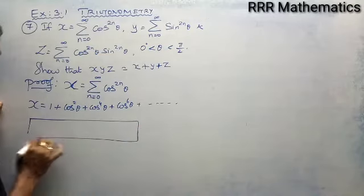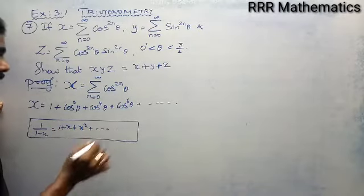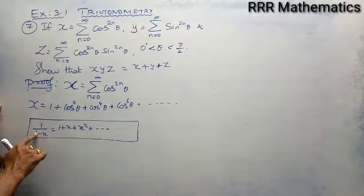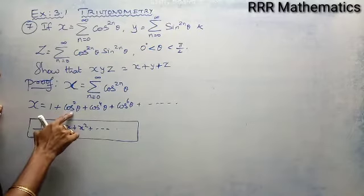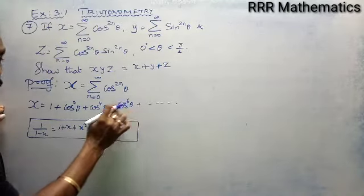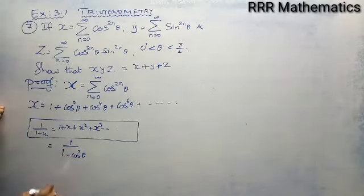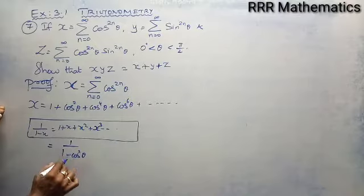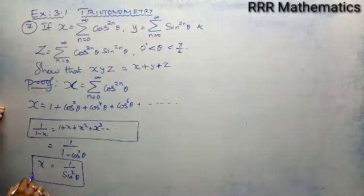We have 1 divided by 1 minus x equals 1 plus x plus x square, and so on. In the place of x we have cos square theta, so we get 1 plus cos square theta plus cos square theta whole square plus cos square theta whole cube, and so on. I can write this as 1 by 1 minus cos square theta. Since 1 minus cos square theta equals sin square theta, I can write x as 1 by sin square theta.